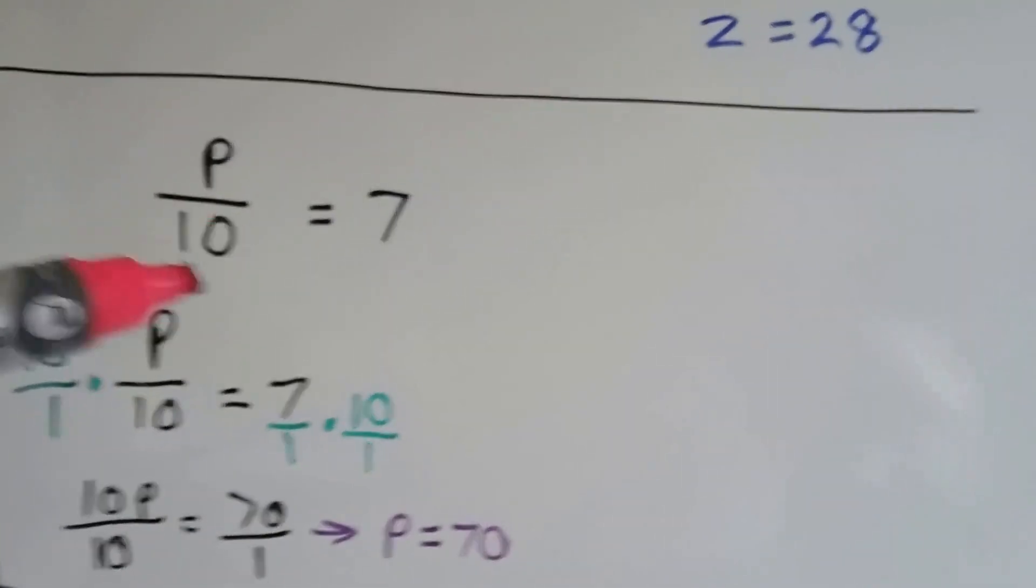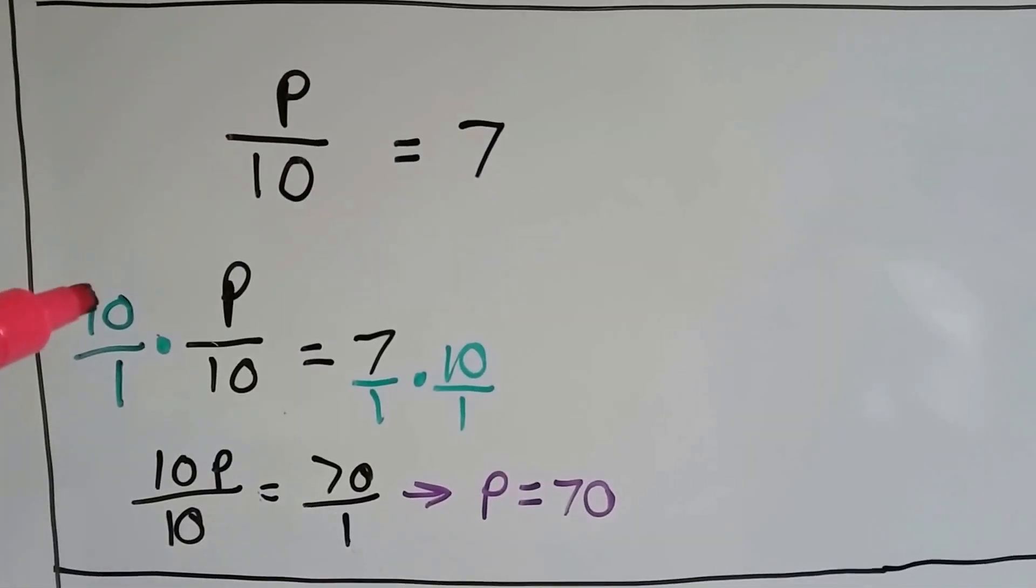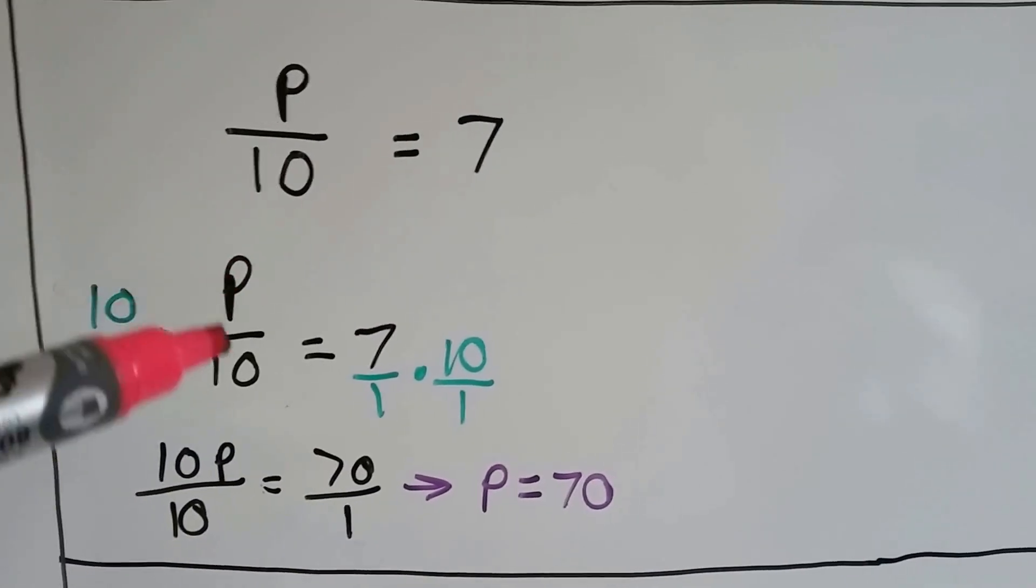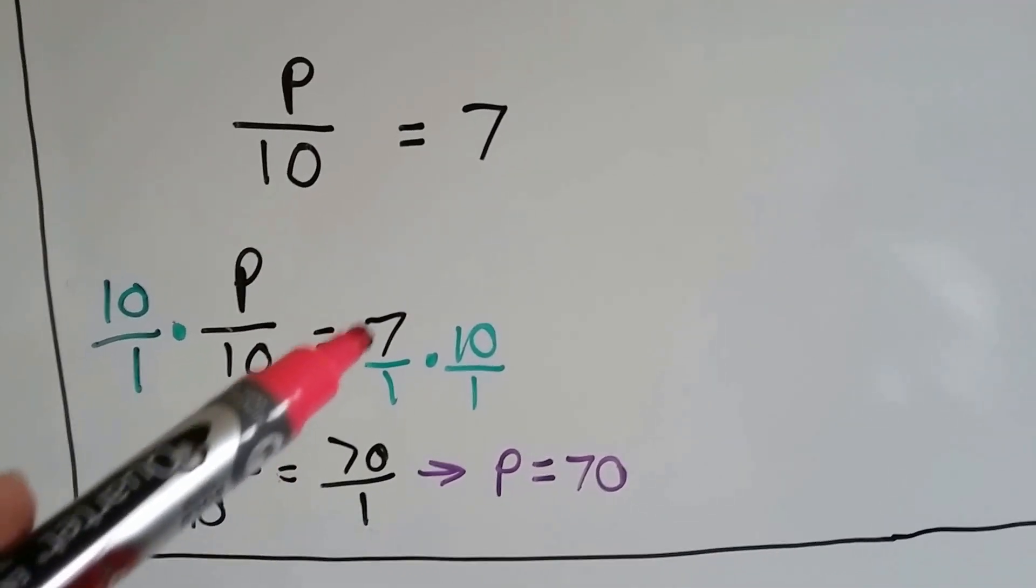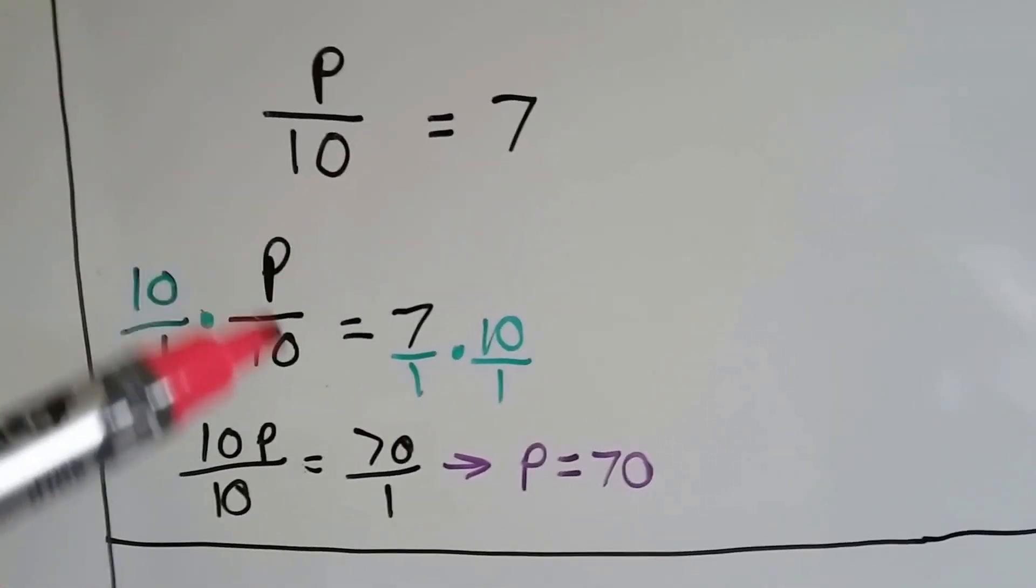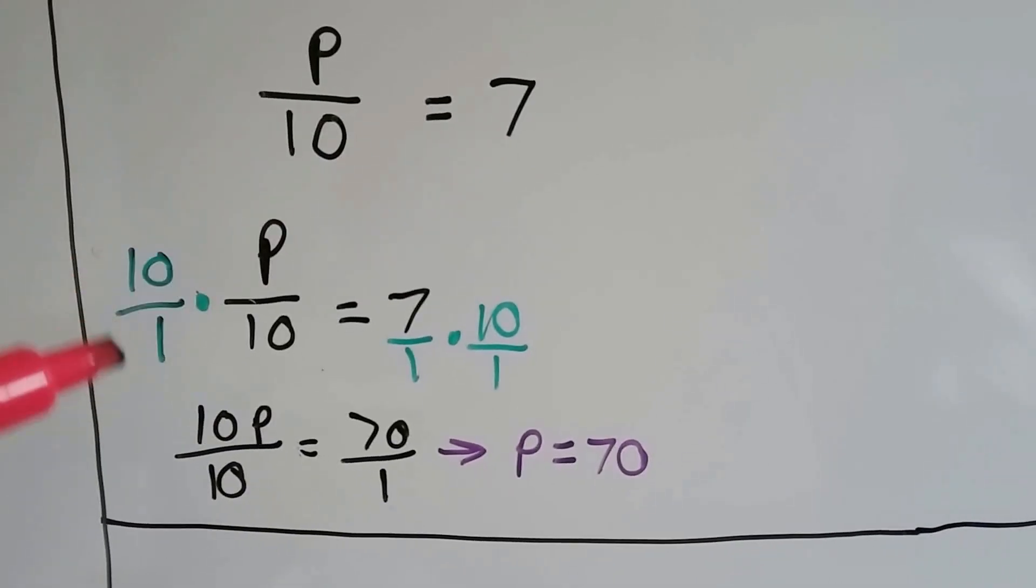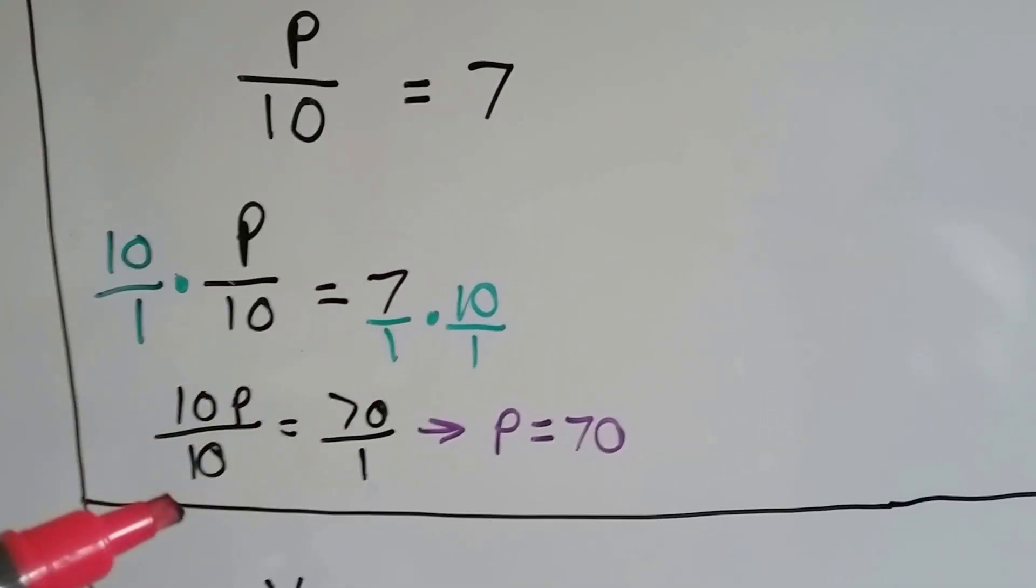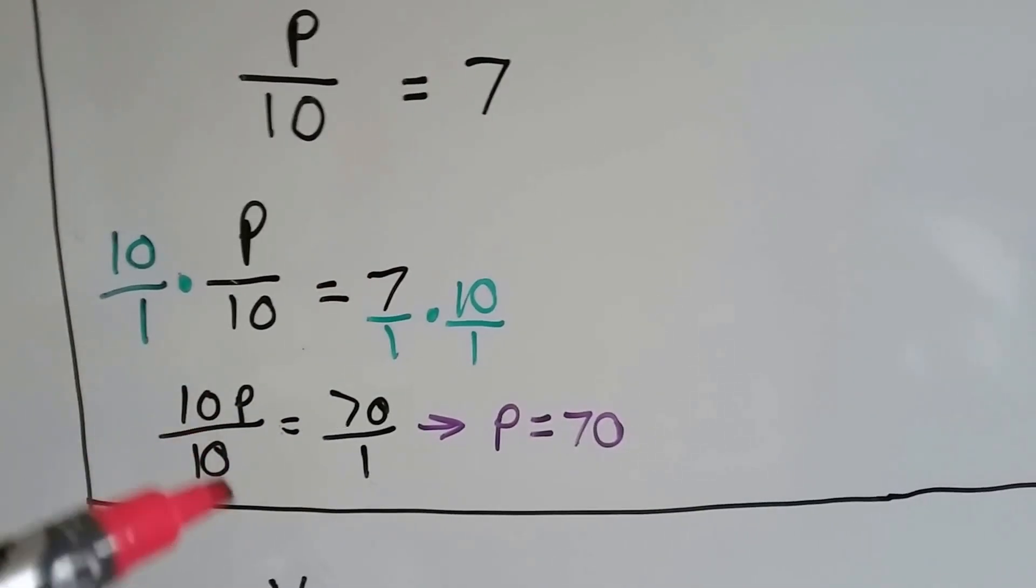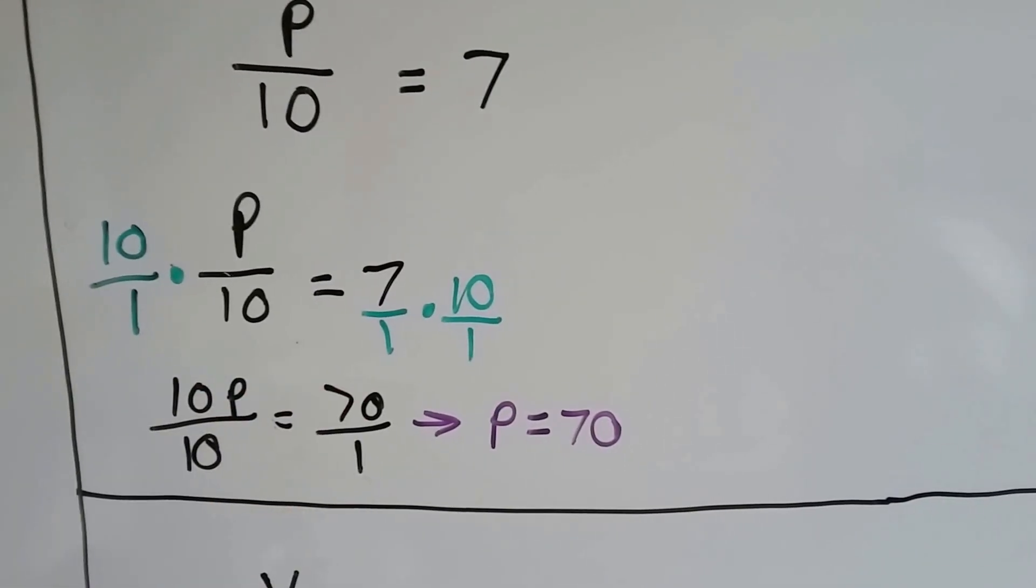Let's try it again. p over 10 equals 7. We're going to multiply both sides by the denominator. 10 over 1 times p over 10, and 7 over 1 times 10 over 1. Because we're multiplying this fraction, we have to turn everybody into a fraction. We end up with 10p over 10 equals 70 over 1. This 10 cancels out that 10, so we have p equals 70.